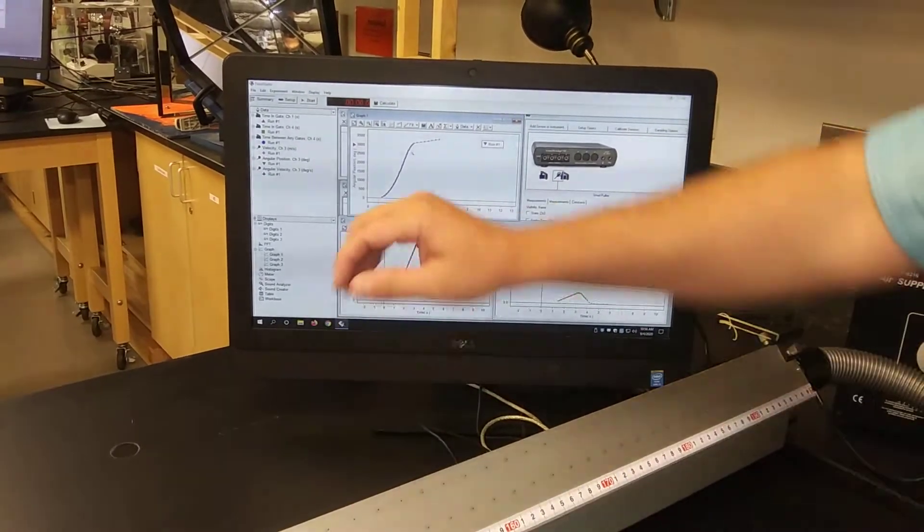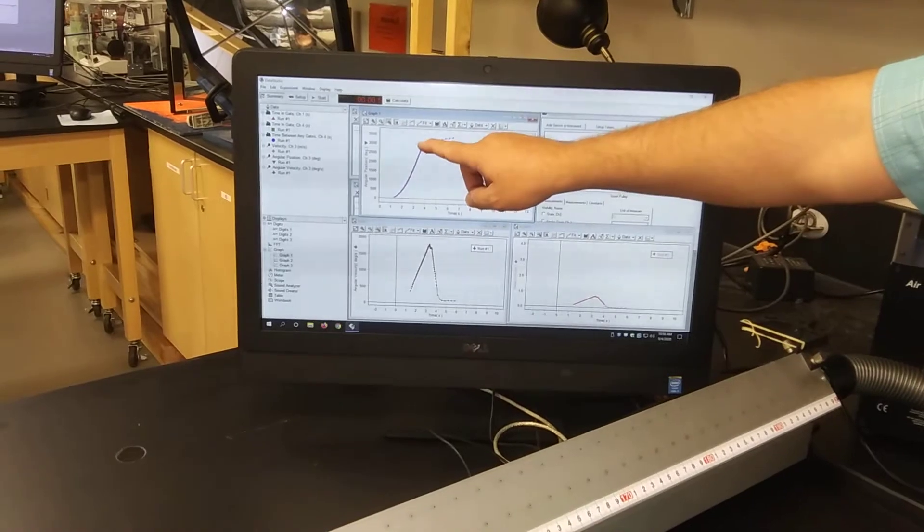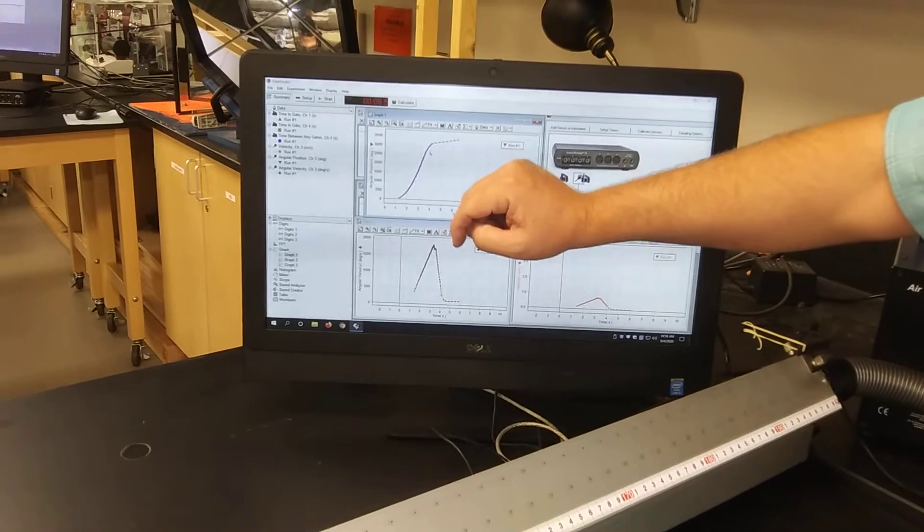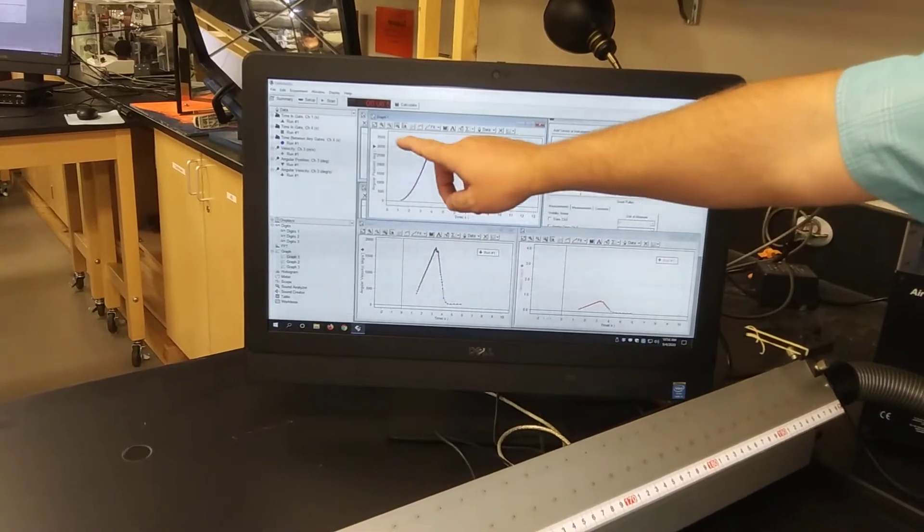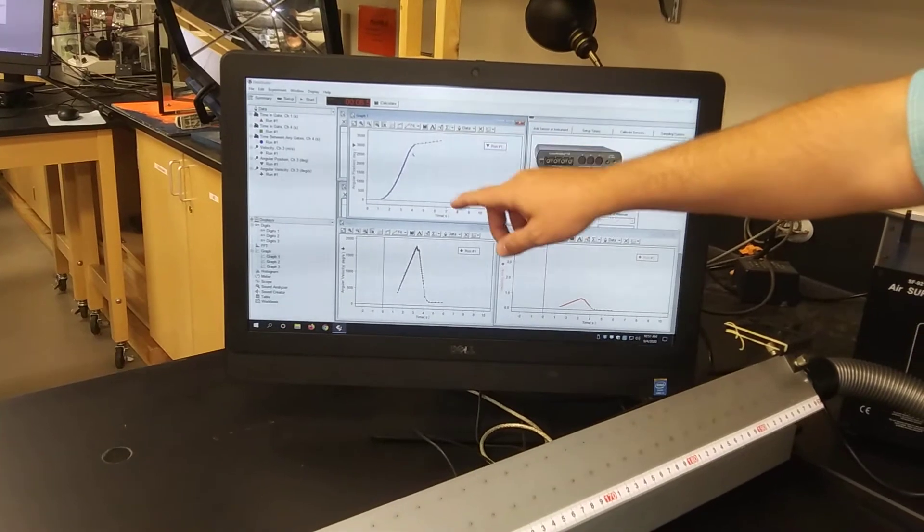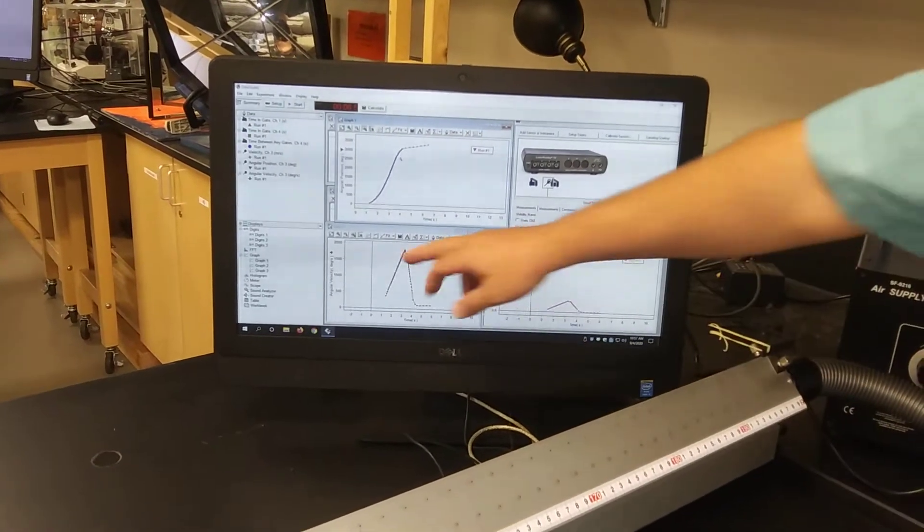Right there, you can see that the angular position is going up. Obviously, every 360 degrees would be one time around. So this went around almost 10 times here. You can see we almost got to 3,600, so it went around 10 times. From that information,